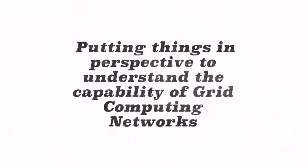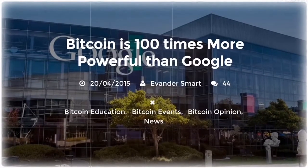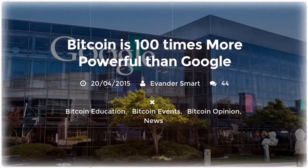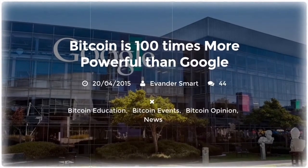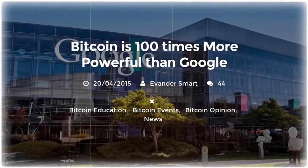Now let's put things in perspective to understand the capability of grid computing networks. The grid computing Bitcoin network is 100 times more powerful than Google.